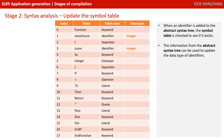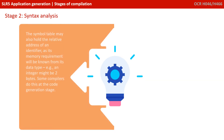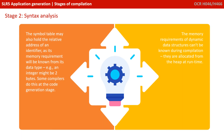When an identifier is added to the abstract syntax tree, the symbol table is checked to see if it exists. The information from the abstract syntax tree can be used to update the data types of the identifiers. Additionally, the symbol table may hold the relative addresses of an identifier, as its memory requirements will be known from its data type — for example, an integer might be two bytes. Some compilers do this at the code generation stage. The memory requirements of dynamic data structures can't be known during compilation — they have to be allocated at runtime from a special area of memory known as the heap.